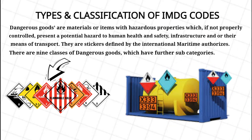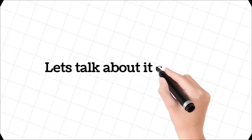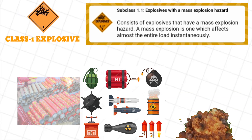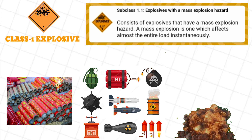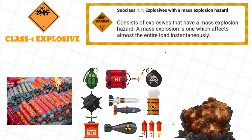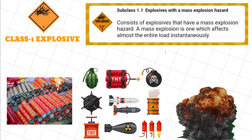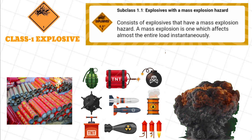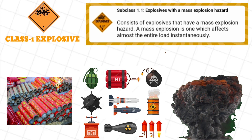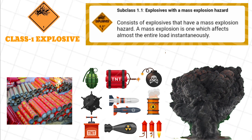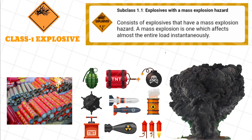There are 9 classes of dangerous goods, which are further subcategorized. Class 1: Explosives. Subclass 1.1, Explosives with a mass explosion hazard, consists of explosives that have a mass explosion hazard. A mass explosion is one which affects almost the entire load instantaneously.